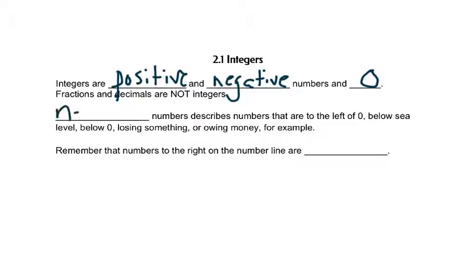Negative numbers describe numbers that are below zero, to the left of zero, below sea level, like you're losing something or you owe money. Remember that all numbers to the right on the number line are bigger.